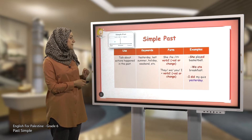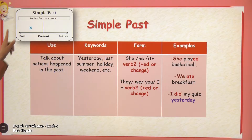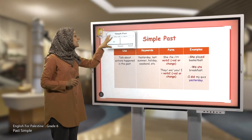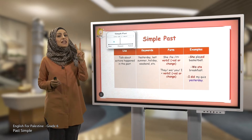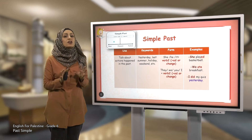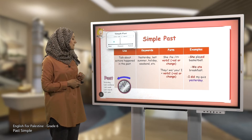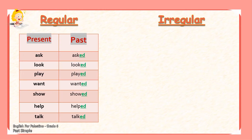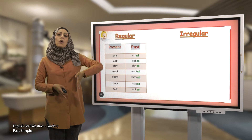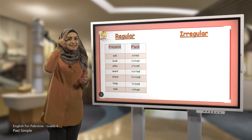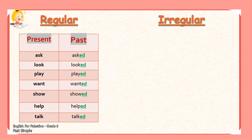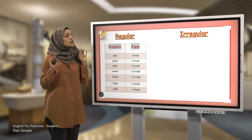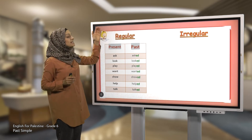Excellent, students! Now let's remember that we are talking about the past — things that happened in the past. With all subjects, we change the verb into its past form, which means either we add E-D or we change the verb completely. We have regular verbs — regular means they all follow the same rule, and the rule is to add E-D at the end of the verb. And we have irregular verbs — irregular means they don't want to follow the rules; they don't take E-D at the end.